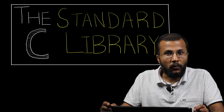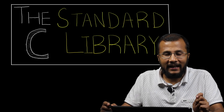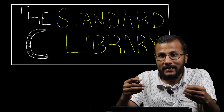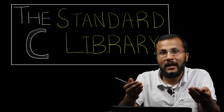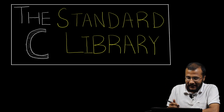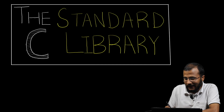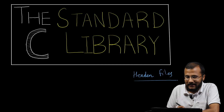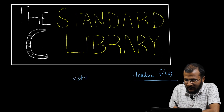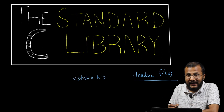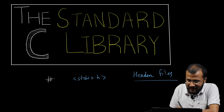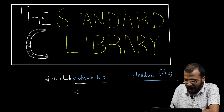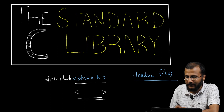In this lecture we are going to learn about the C standard library. All those functions and features that are not available in the core C language are provided to the programmer as the standard library. There are many library functions available in different header files. We have already seen some header files like stdio.h. To include any header file in your program you write #include and then give the name of the header file inside angular brackets.